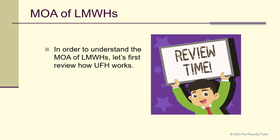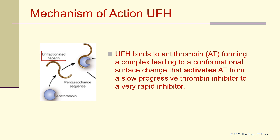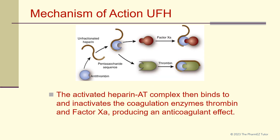In order to understand the mechanism of action of low molecular weight heparins, let's first review how unfractionated heparin works. Unfractionated heparin binds to antithrombin, forming a complex that leads to a conformational change activating antithrombin from a slow progressive thrombin inhibitor to a very rapid inhibitor. In the diagram, you can see this conformational change in antithrombin — notice the receptor site opening up wider after binding to heparin. The activated heparin-antithrombin complex then binds to and inactivates the coagulation enzymes thrombin and factor Xa, producing an anticoagulant effect.